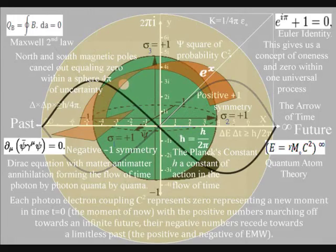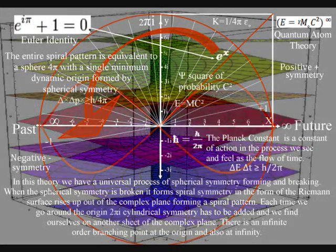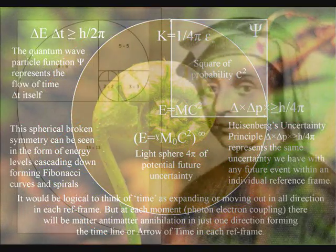When the spherical symmetry is broken, it forms spiral symmetry, forming the imperfect spiral symmetry that is visible in nature, as the Fibonacci spiral.